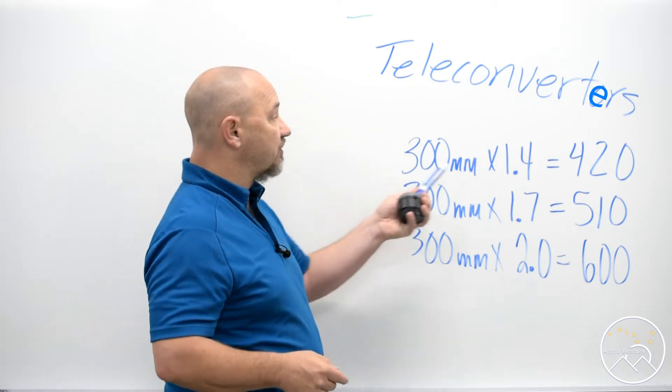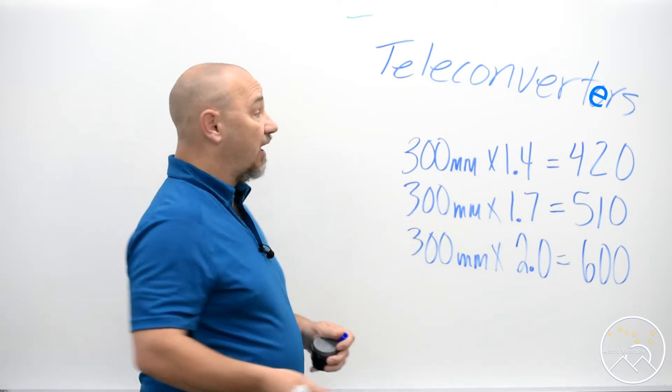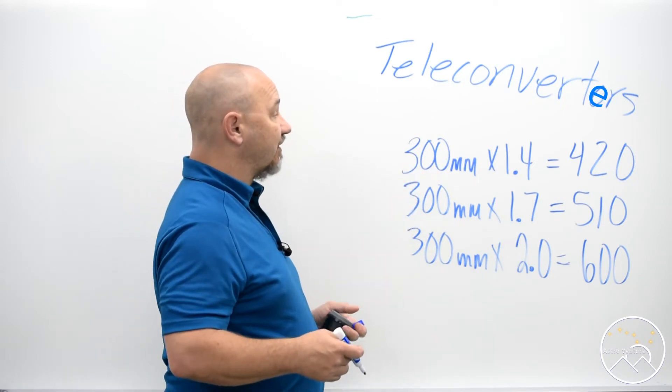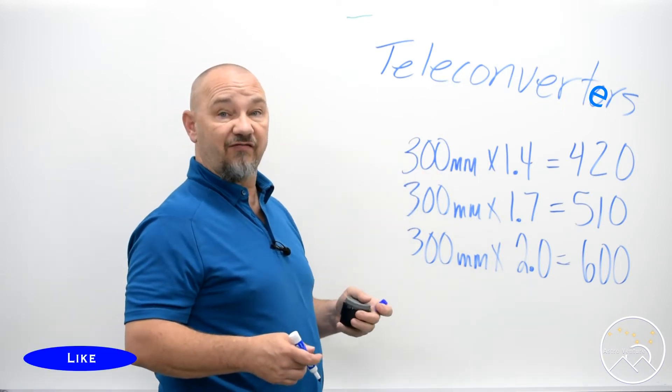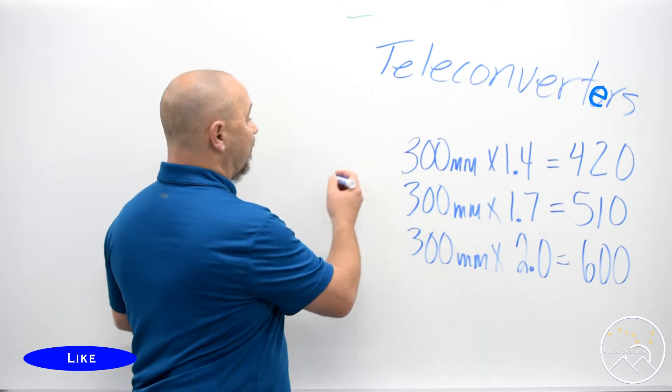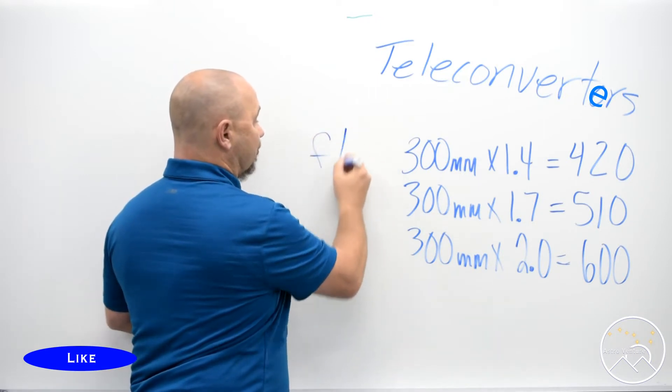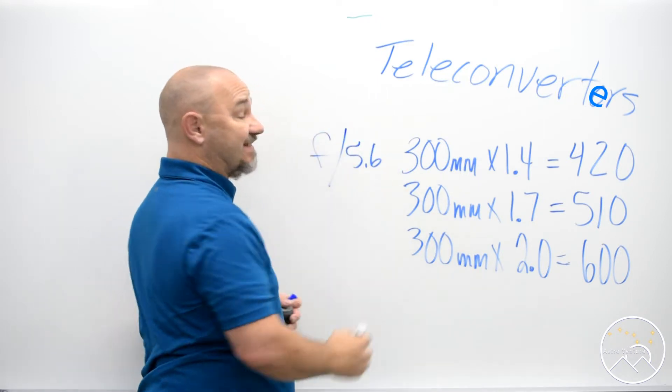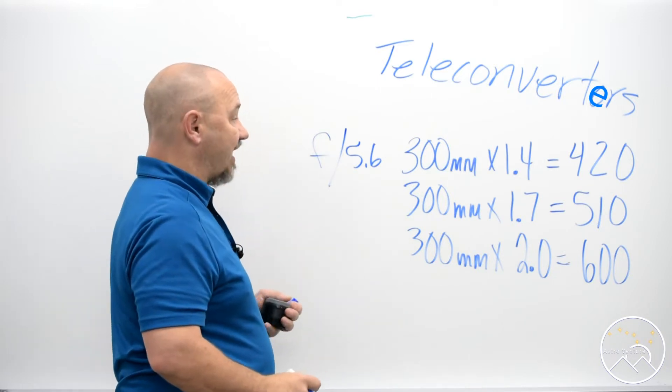So for example, this 300mm lens paired with a 1.4 teleconverter, if we started out with an F4 prime that means our new aperture is going to be 5.6. So we've lost a good bit of light.